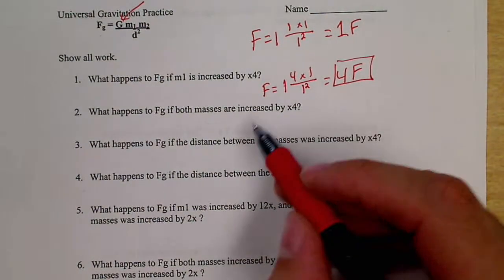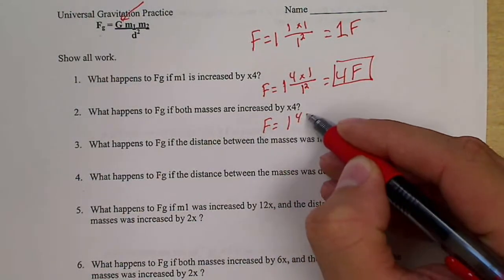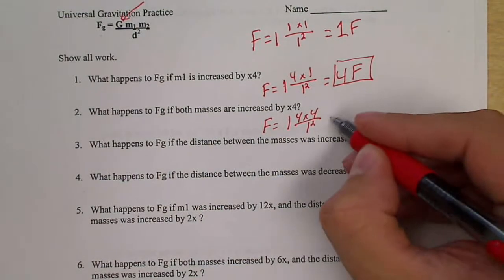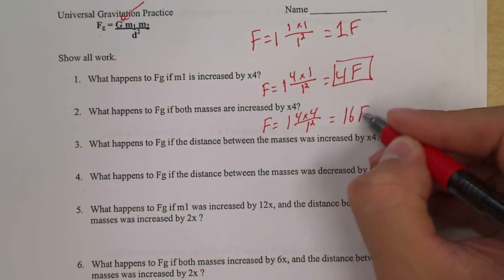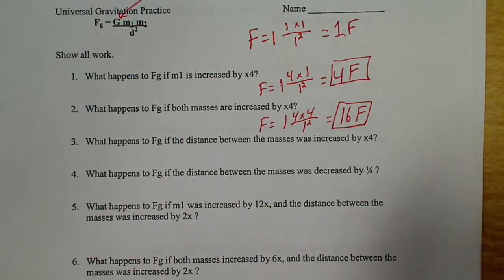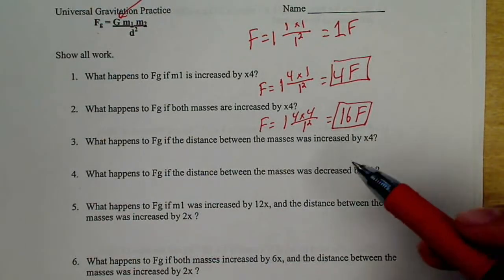So let's do this one. If both masses are increased by four, so this time I put in a four for both masses. My distance is still the same though. This is going to give me 16 times more force. Now force and mass are directly proportional, so the forces get bigger as the masses get bigger.